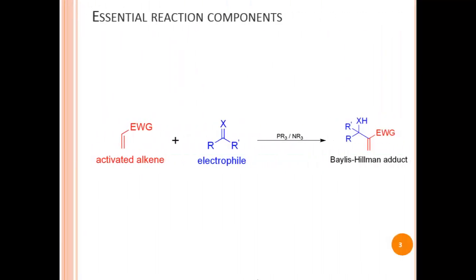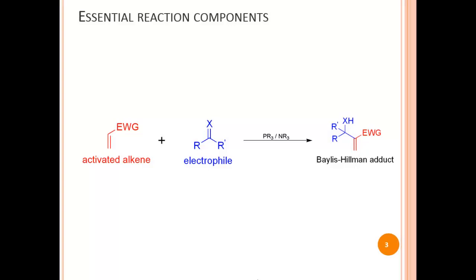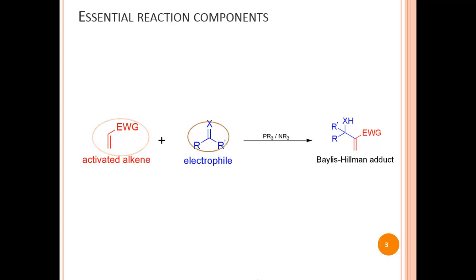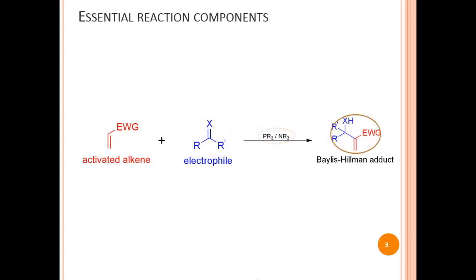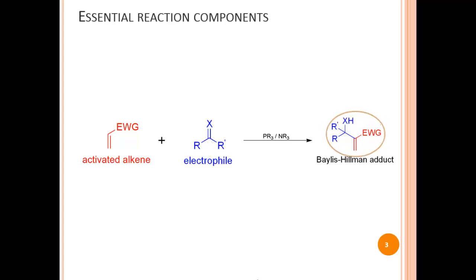The Bayliss-Hillman reaction involves two different reactants plus a catalyst. One of the reactants must be an activated alkene; the other must be an electrophile. The catalyst is shown above the reaction arrow. Thus, the Bayliss-Hillman reaction can be defined as the reaction that results in the formation of a new carbon-carbon bond between the alpha position of the activated alkene and the electrophilic carbon of the electrophile, yielding a multifunctional Bayliss-Hillman adduct.